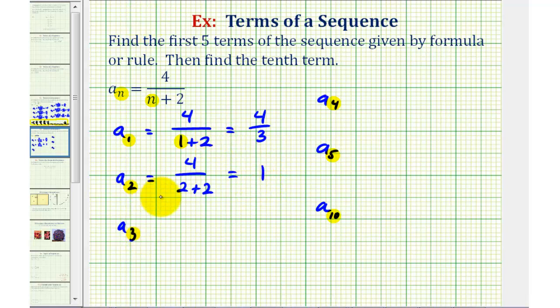For a sub three, we'd have four divided by three plus two. Three plus two is five, so we have four fifths for the third term.